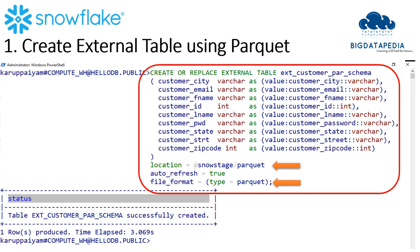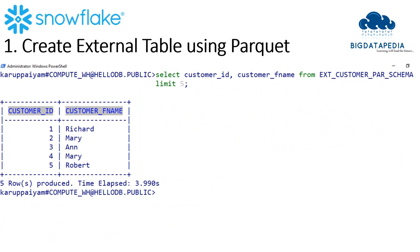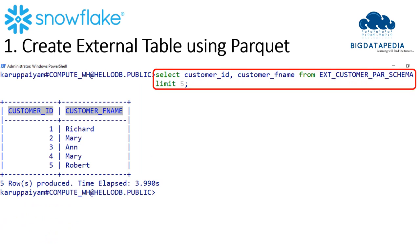The table will automatically be created. Once the table is successfully created, we will also query it as usual. We will visualize the data with a LIMIT of 5 records, and it is working fine.